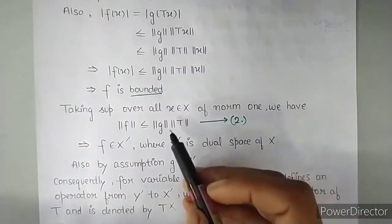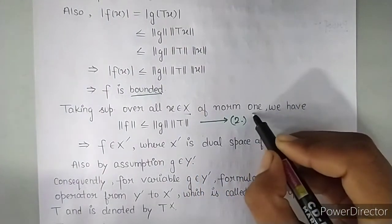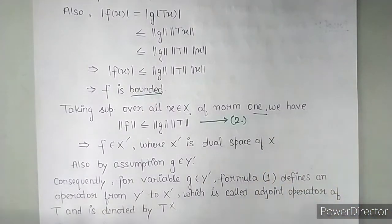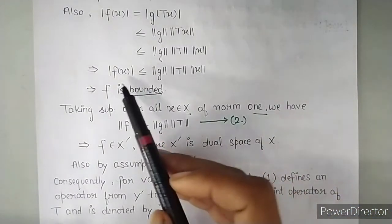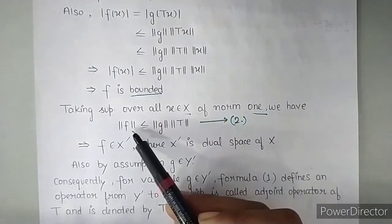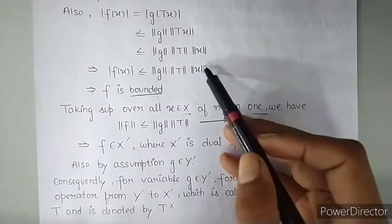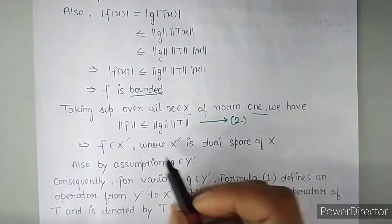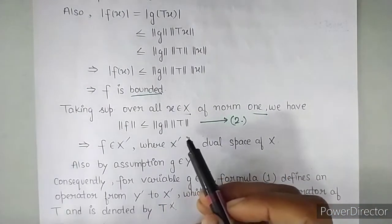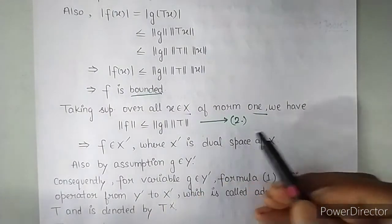So taking supremum over all X belonging to X of norm 1, then if we take supremum over norm 1, this mod F of X becomes norm of F. And either norm of G norm of T or norm of X is 1. So we are left with only norm of G into norm of T. And let us say this be equation number 2.